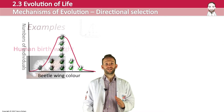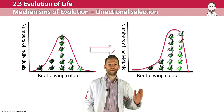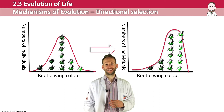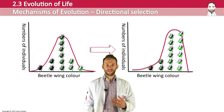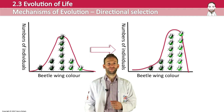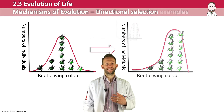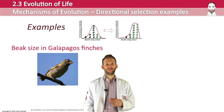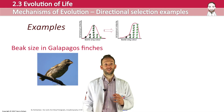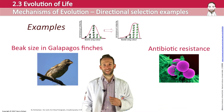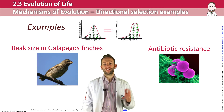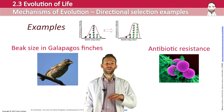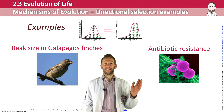Directional selection is when the population shifts toward one of the extremes — either left or right. Looking at the beetle wing colour example, the distribution has shifted so the lighter colour beetle is now favoured. For instance, beak size in Galapagos finches moves towards bigger or smaller depending on food source and climatic conditions. Another example is antibiotic resistance: bacteria can become resistant to antibiotics through mutations; these resistant bacteria survive and reproduce, shifting the population towards the new variation so that the original average is no longer selected for.